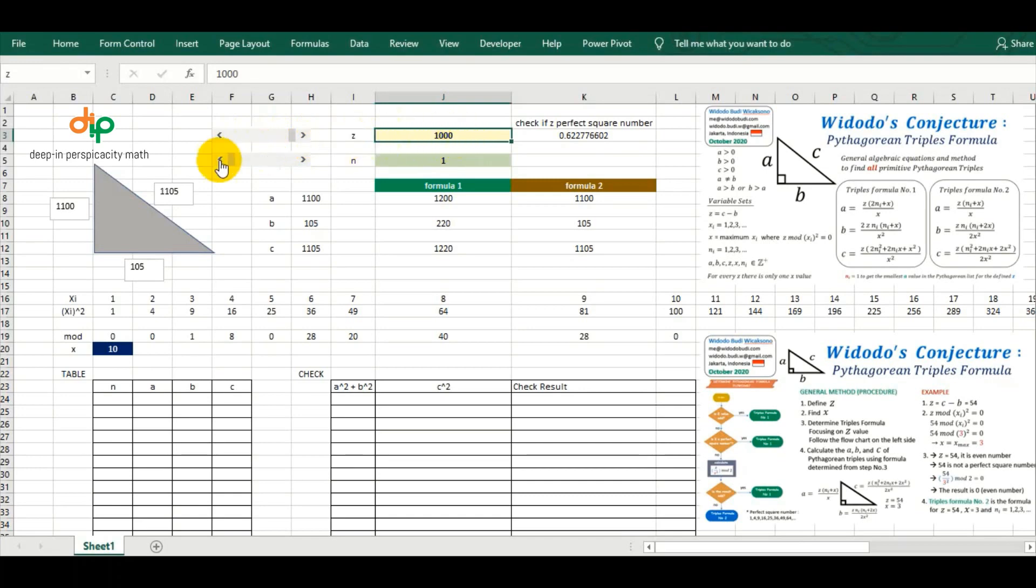The scroll bar was set at 1000 as the maximum value. You can set more to expand the range of verification.